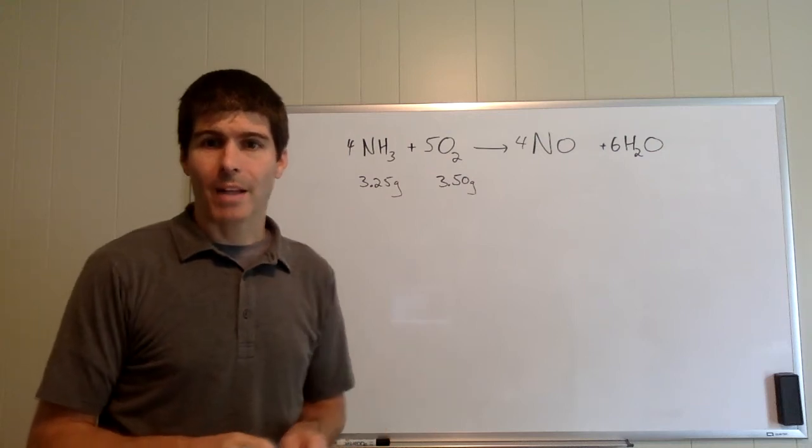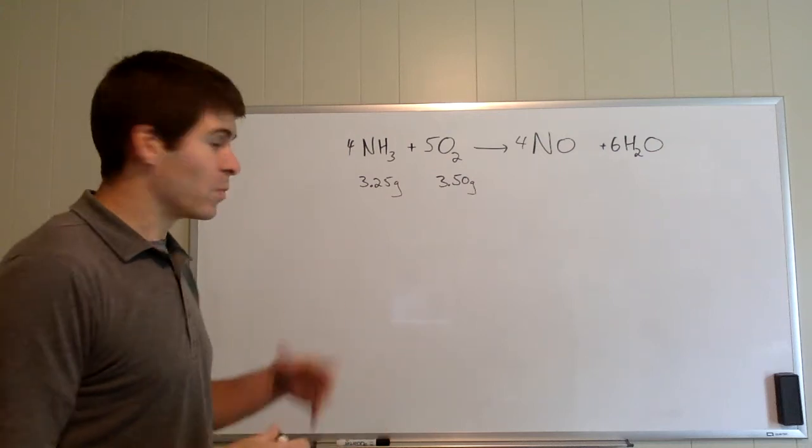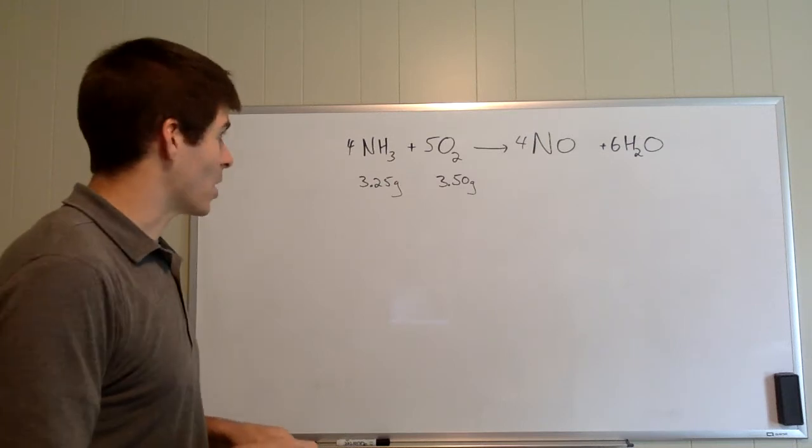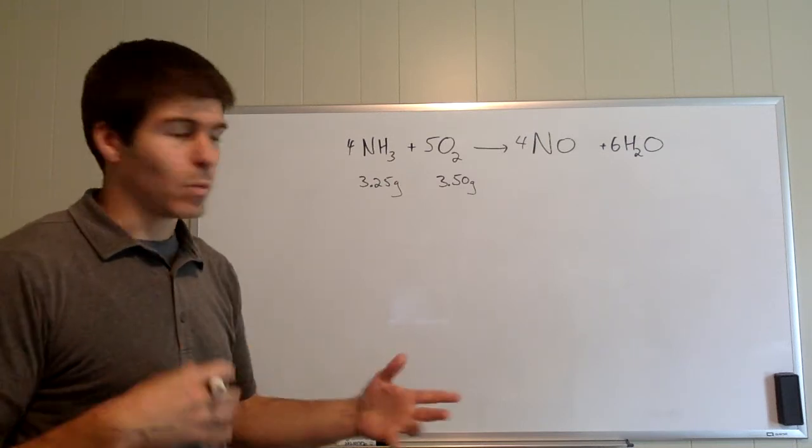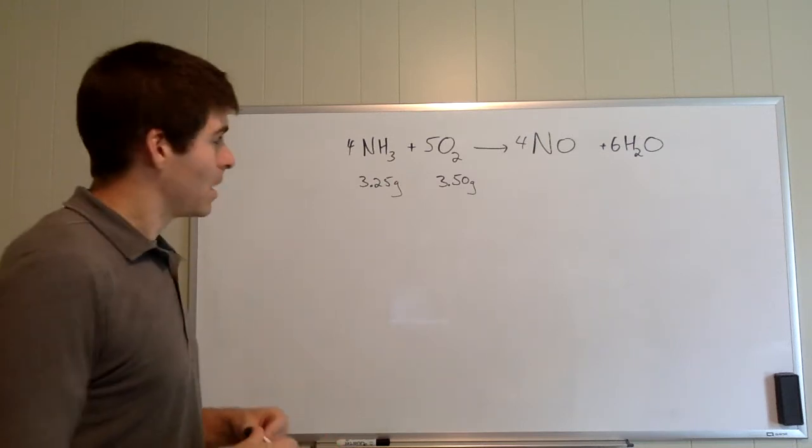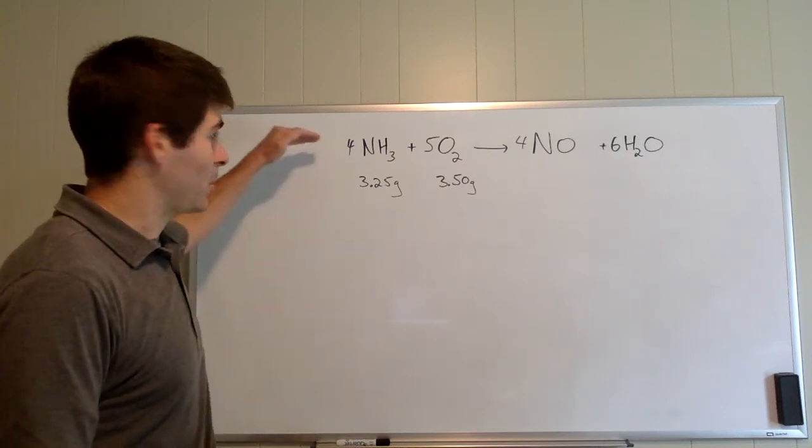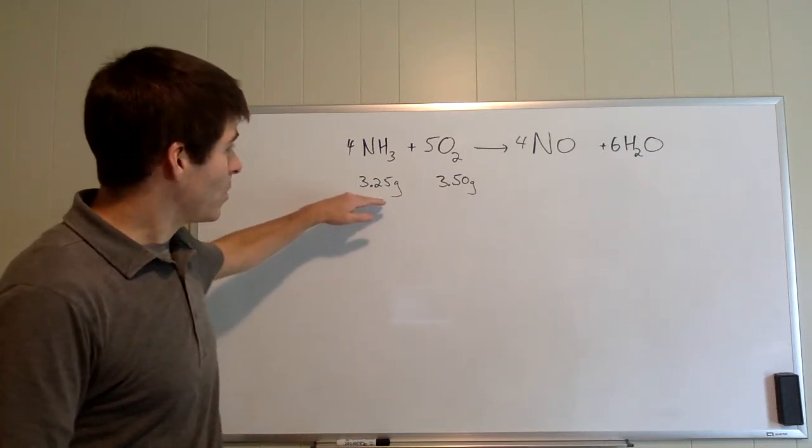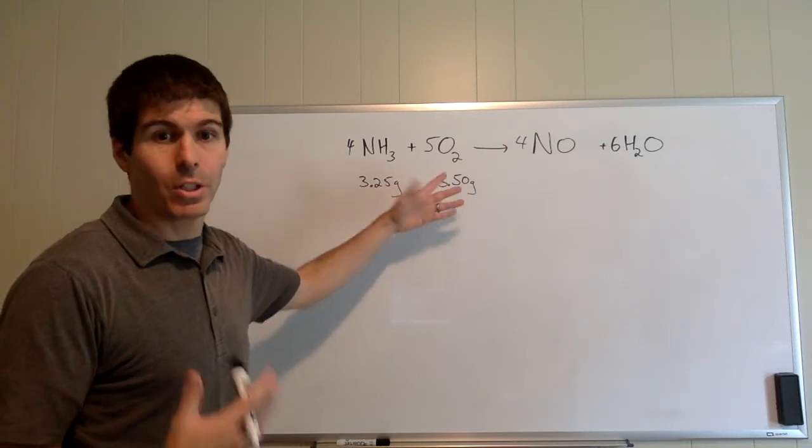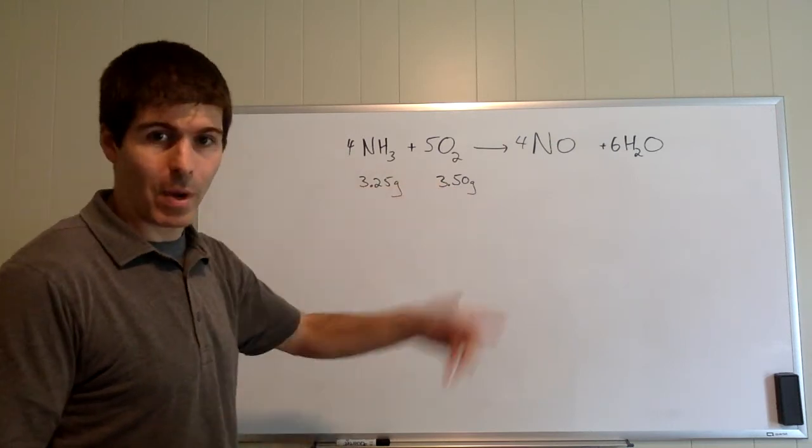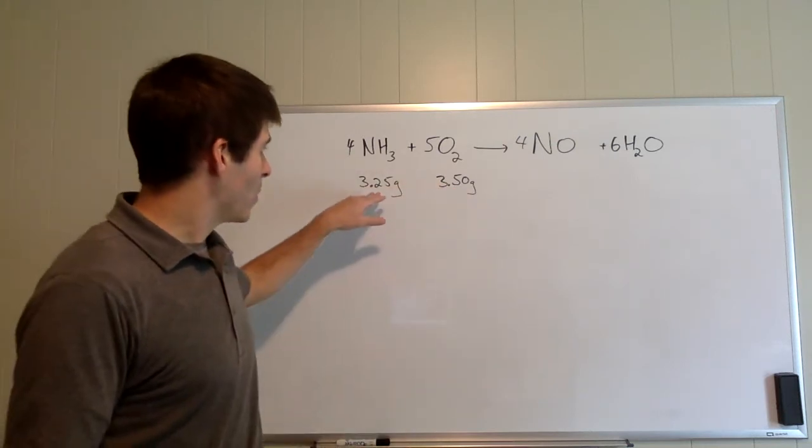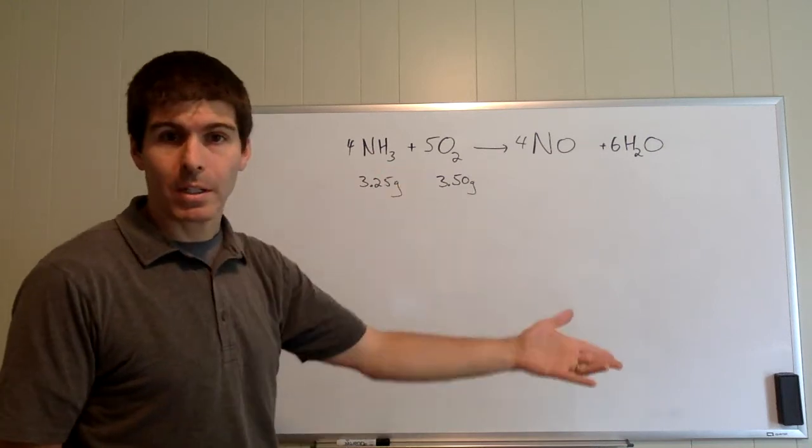Okay, I want to start with a limiting reactant problem just to see how we can read this problem to get us started the right way and what the questions are actually asking. Typically in a limiting reactant problem, first you have to get a balanced equation, then you're given amounts. Traditionally you have masses because that's how we weigh things in a lab, and we would say how much product can we make.